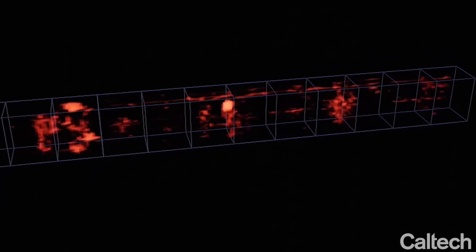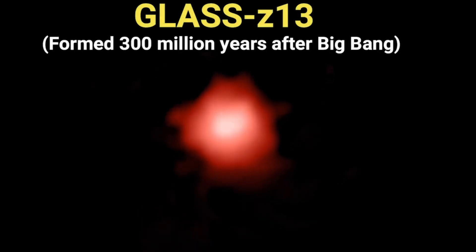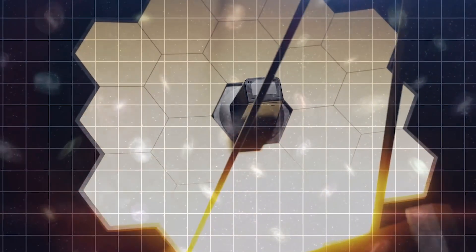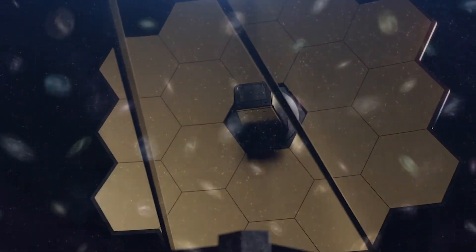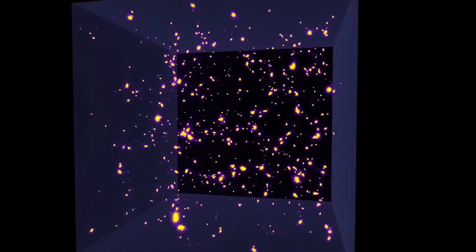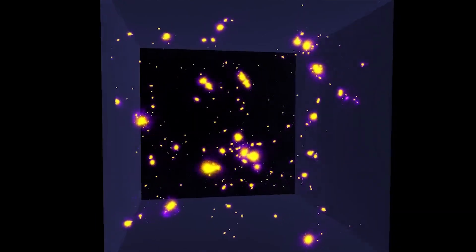The oldest galaxy, Glass-Z 13, with a redshift of 13.2, formed just 300 million years after the Big Bang. This abundance challenges previous notions of galaxy formation, suggesting a need to revise our understanding, as stated by the lead astronomer at the University of Missouri.